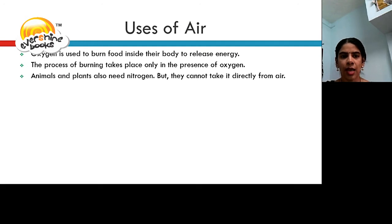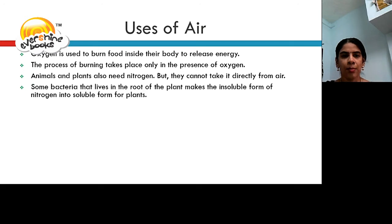Animals and plants need nitrogen but they cannot take it directly from the air. Some bacteria that lives in the root of the plant makes the insoluble form of nitrogen into soluble form of plants. Animals take this nitrogen from the plants.